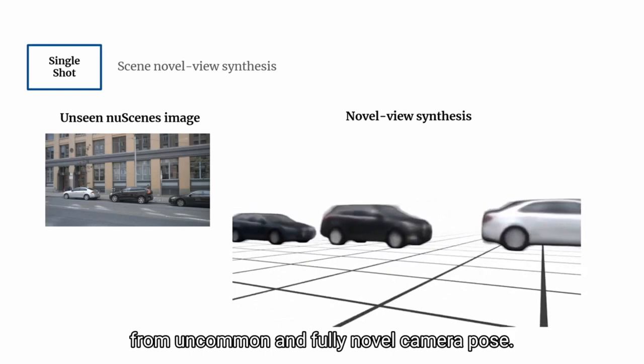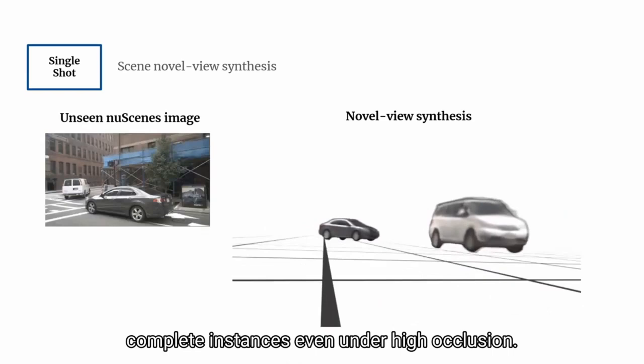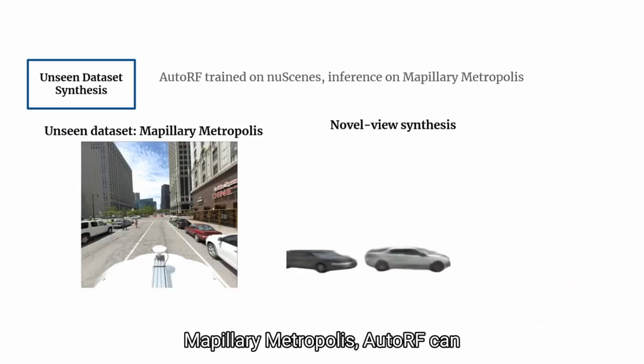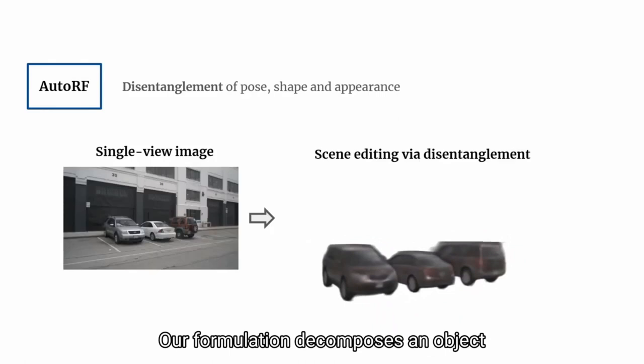It is able to synthesize instances even from uncommon and fully novel camera poses. It can model specular details and complete instances even under high occlusion. Even on rectified 360-degree images from Mapillary Metropolis, AutoRF can synthesize full scenes.